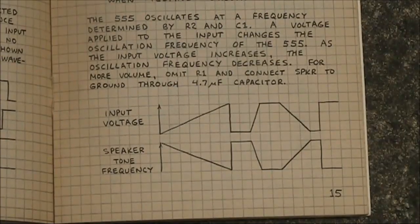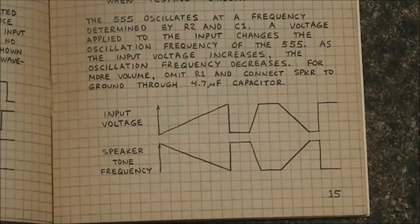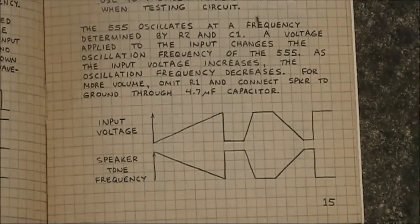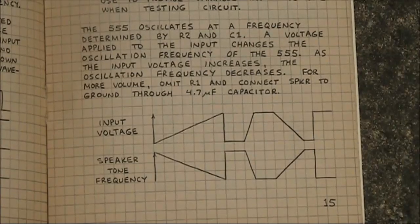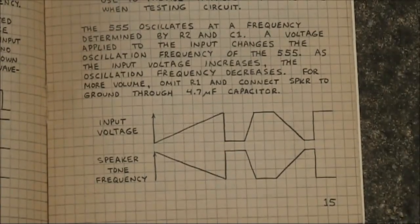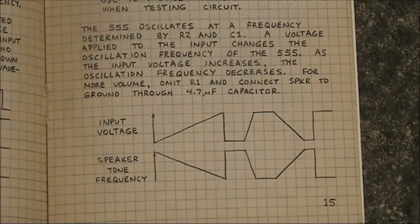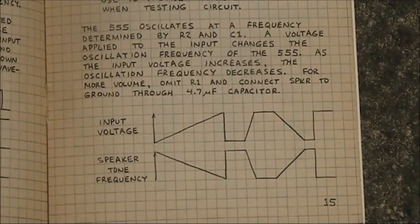That worked but wasn't quite what I needed. The lower the input voltage, the higher the tone frequency. I didn't like that. The idea of the tone going low or almost disappearing is just intuitively better, at least in my mind, if you're trying to adjust something for a null.